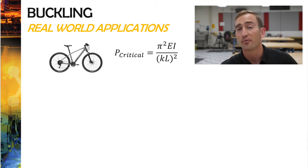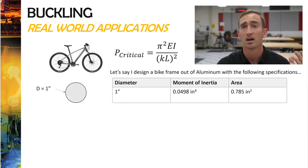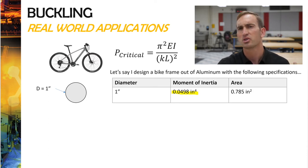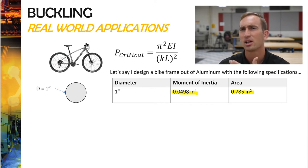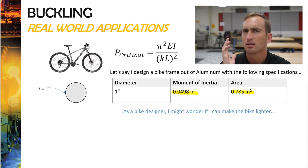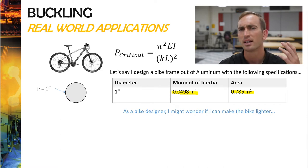Let's say hypothetically I designed the frame of the bike with a cylindrical cross section of one-inch diameter. The moment of inertia of a one-inch cylinder is 0.0498 inches to the fourth, and the cross-sectional area is 0.785 inches squared. As a bike designer, I might look at this design and say this will live up to the loads the bike will be subjected to — it's not going to fail. But is this the most optimal design? I might wonder if I can make the bike lighter.